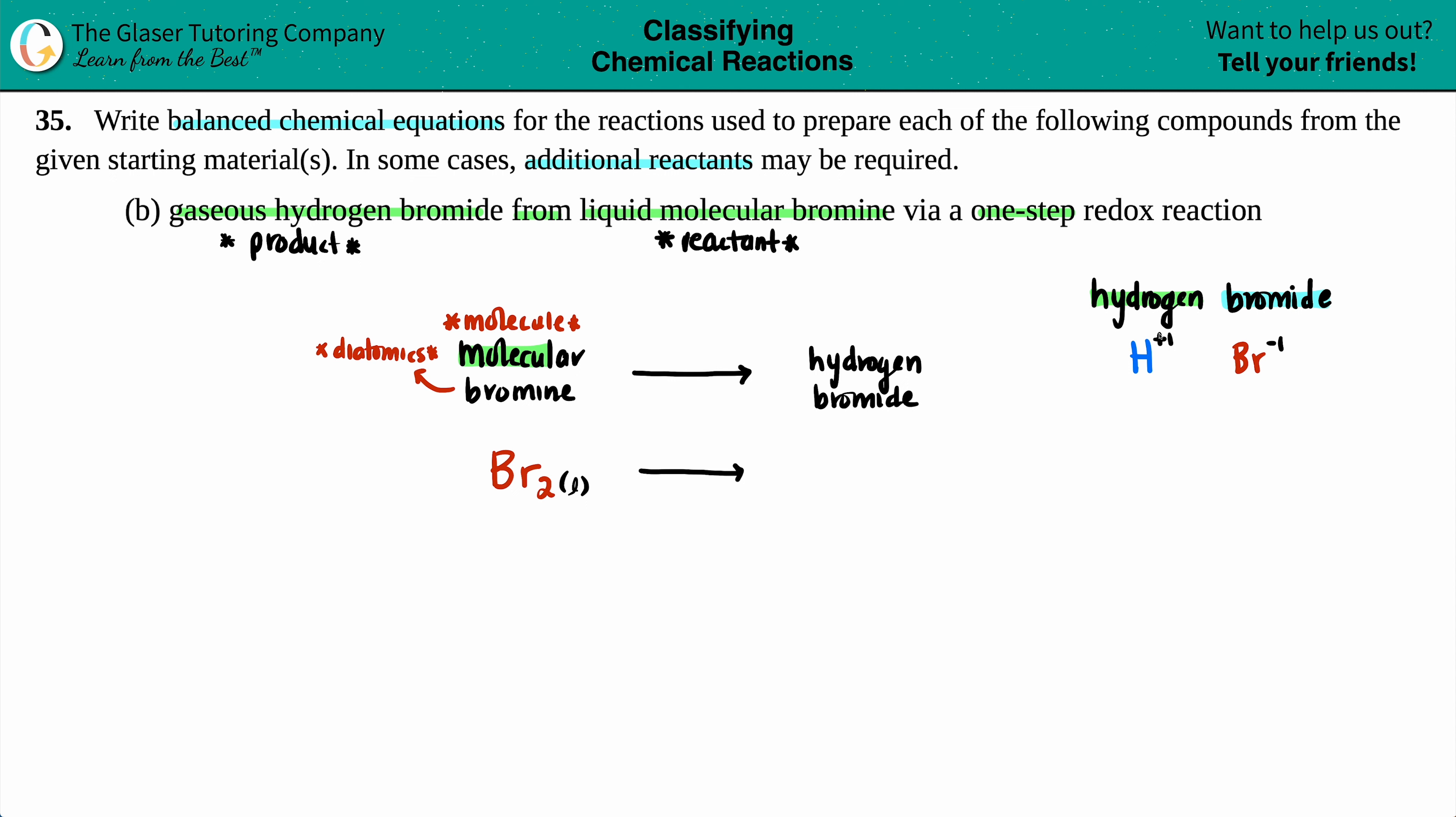So you could always take those charges, plus 1 and minus 1, and crisscross them to figure out how many of each you need. But for this one it's a one-to-one. When you crisscross, who cares about the positives and the negatives, you just want the actual number. So it would just be HBr. And they said that this was a gas, so I'm going to put this as a gas.